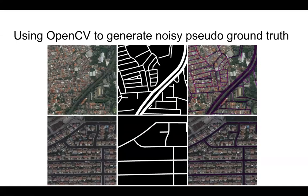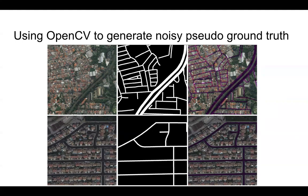In this figure, we show some examples of our rasterized pseudo-ground truth images. Although the structure of the road network in the examples is correct relative to the satellite image, its pixel-to-pixel matching is limited.